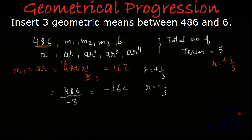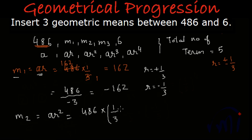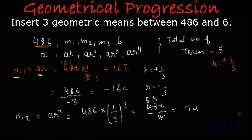Now let's find the value of the second mean, m2 = ar². The value of m2 will be 486 multiplied by (1/3)², which equals 486 divided by 9. That gives us 54. This will always be positive because we are using the square of r — even when r is negative, squaring a negative term gives a positive result. So the value of the second mean is 54.